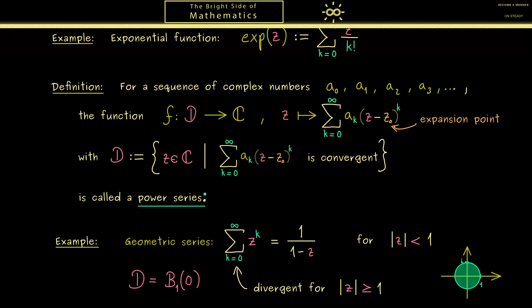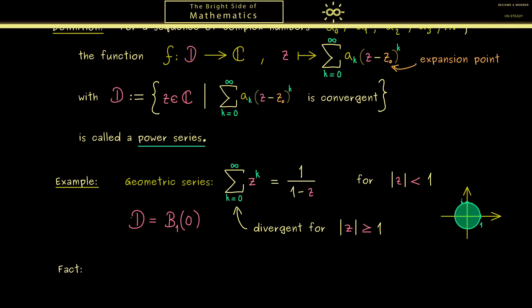Now it turns out that for any power series this situation is not essentially more difficult. Indeed the following fact follows from the geometric series. It simply tells us that for a given power series there is a maximal radius r for this circle here.